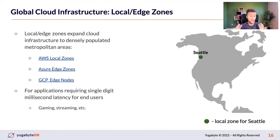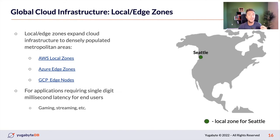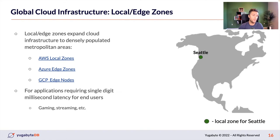In addition to availability zones, we have local or edge zones that expand cloud infrastructure to densely populated metropolitan areas — London, New York, Seattle, Austin, Texas. These zones are used by applications requiring single-digit millisecond latency for end users, such as streaming or gaming applications.